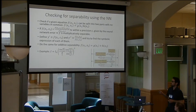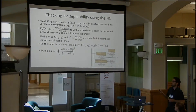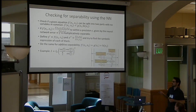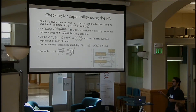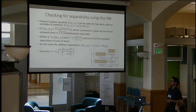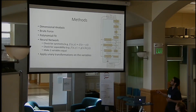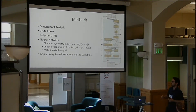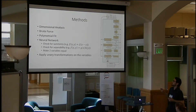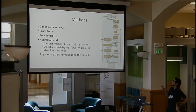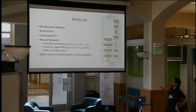Here is an example where after applying multiplicative separability you get a function containing only phi and a function containing only n and delta, and y0 is removed by the dimensional analysis part. Going back to the overall algorithm: we pass the initial data file to our algorithm, it goes through dimensional analysis, polynomial fit, and brute force.